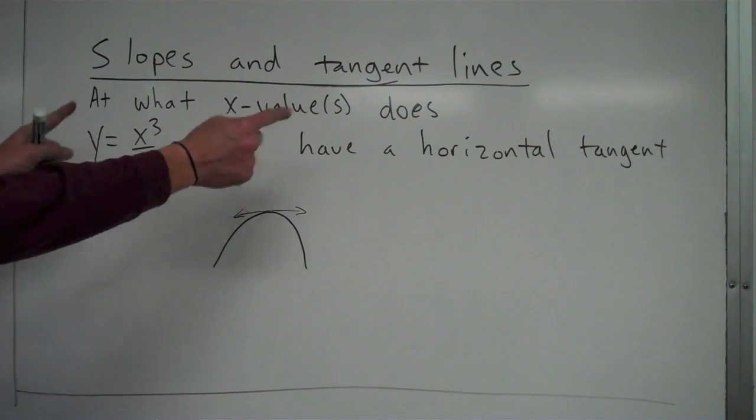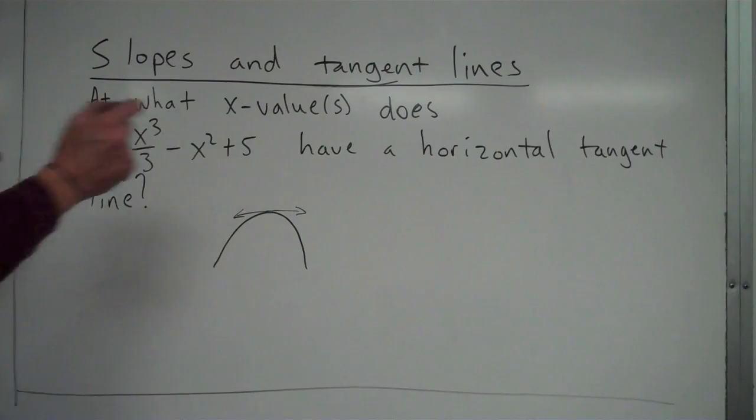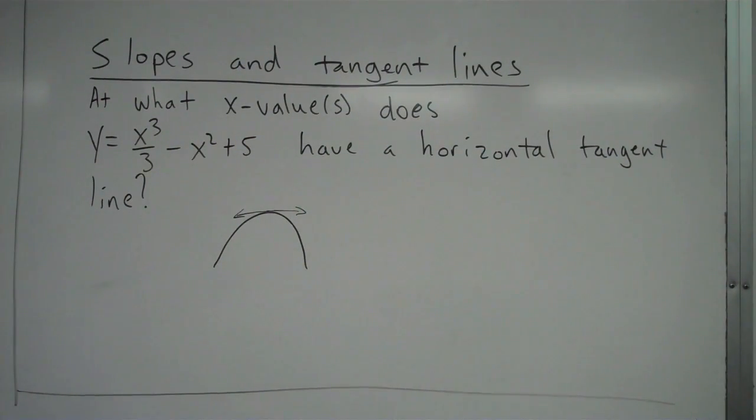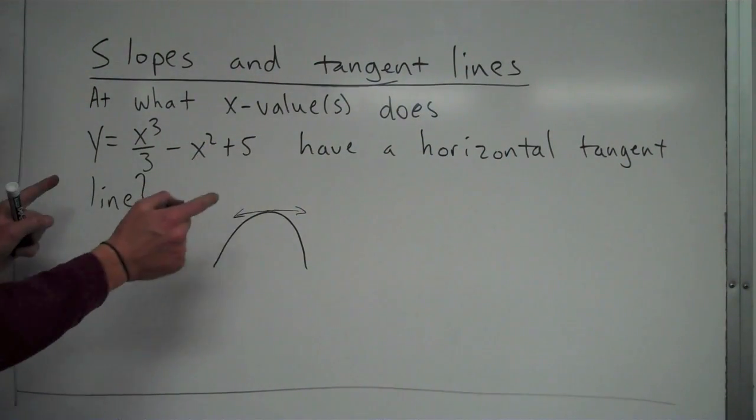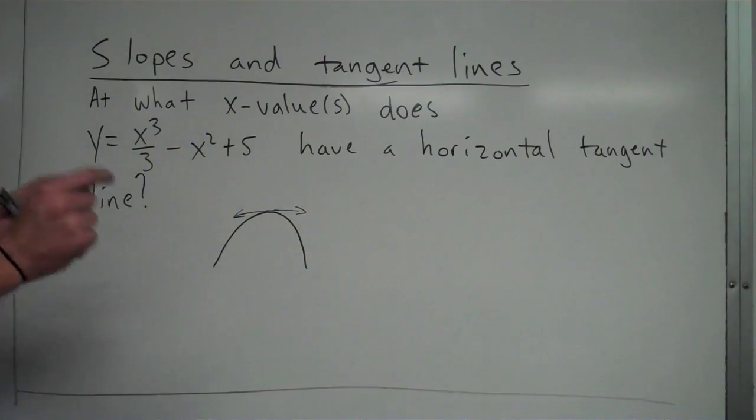So this equation right here will have a horizontal tangent line when its slope is 0. And remember, slope and derivative are synonyms. So this equation has a horizontal tangent line when its derivative is equal to 0.